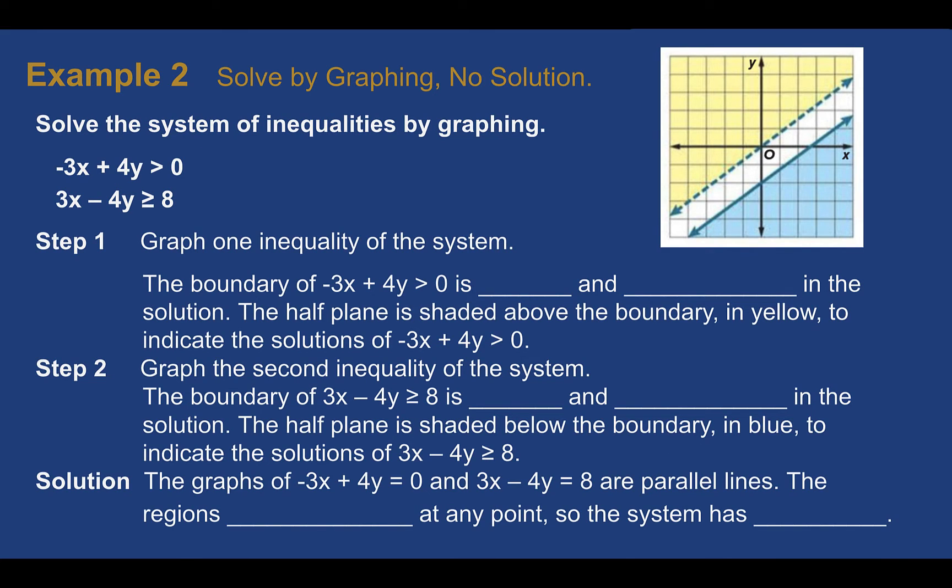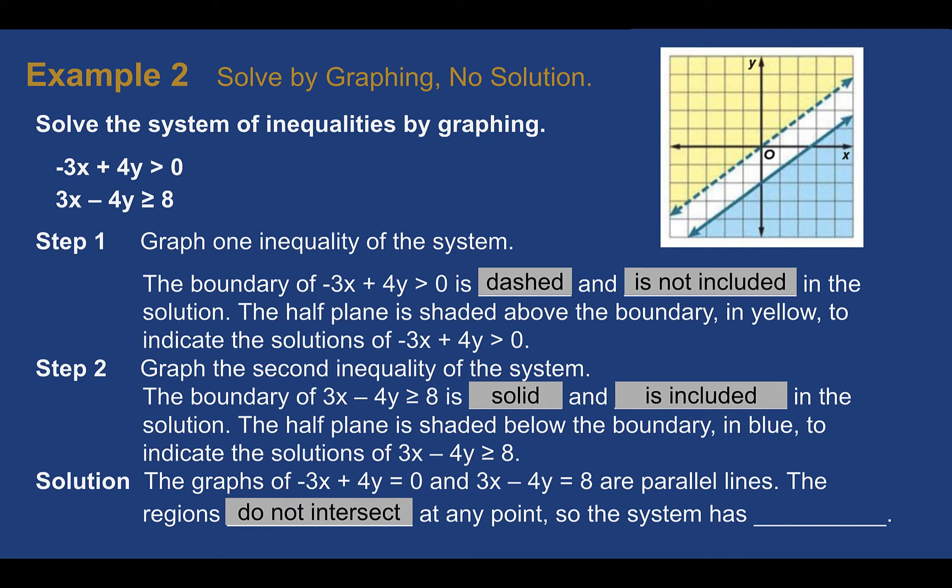Example 2. Solve by graphing. No solution. Solve the system by graphing. So again, we're going to graph both of our systems. Negative 3X plus 4Y is greater than 0. It's dashed. So we would not include it. 3X minus 4Y is greater than or equal to 8 is solid. So anything that was on those lines would be included. But if we look at our graph, we can see when we graph it, there are no areas that overlap. Nothing intersects. This would mean that the system has no solution. There's nowhere on this graph that will be in both areas at the same time. And again, that's what we're looking for. That double shaded area. So since there's no place that exists, it has no solution.